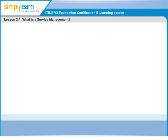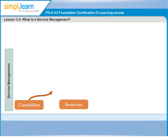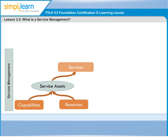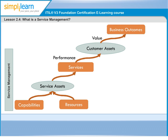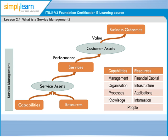Some time back, we defined service management as an effective and efficient process-driven management of transforming IT resources into valuable IT services. Let me explain this further by means of a diagram. As you can see in this diagram, it emphasizes the link that has to be preserved between the desired business outcomes and the services that service management is responsible for. So what do we mean by capabilities, resources, and other terms used in the graphic?